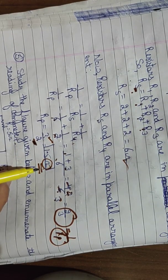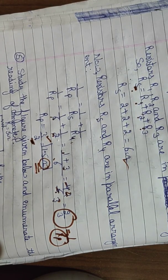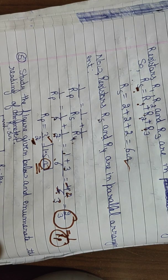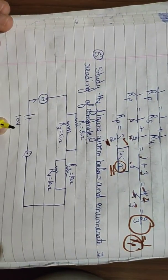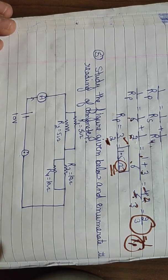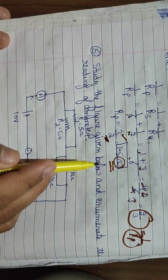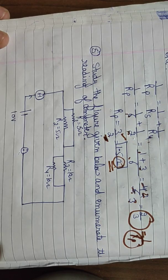Always remember to write the SI unit with your answer at the end — it is very important. If you forget to write it by mistake, the examiner will directly deduct half marks. So keep this in mind because every small mark matters. Half marks gained can put you at the highest point in the toppers' list. Now let's proceed to the last numerical of this video — Numerical Number 5.